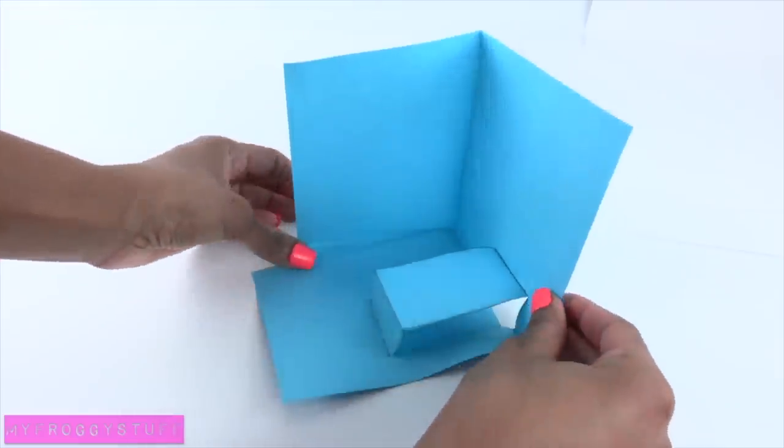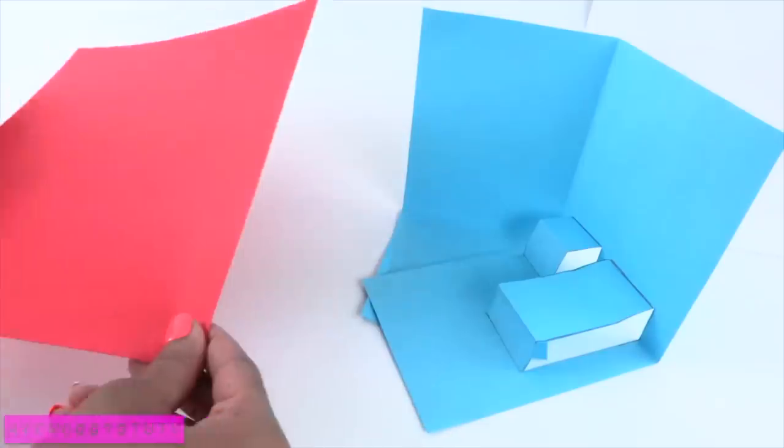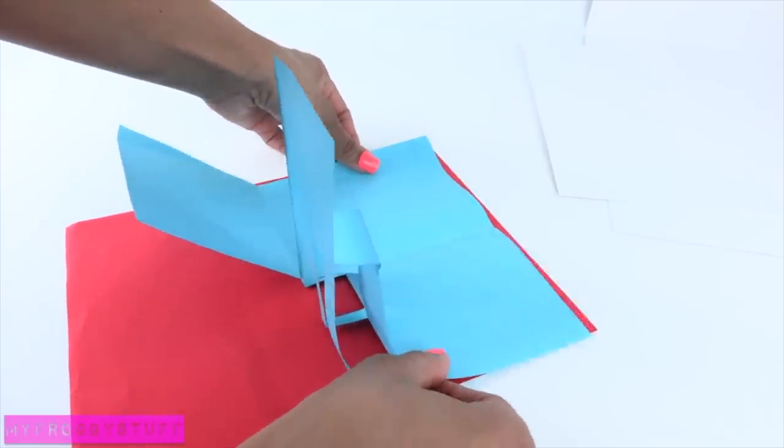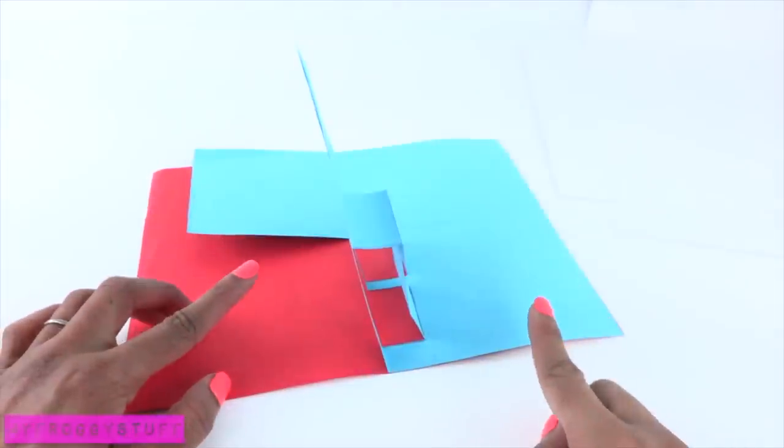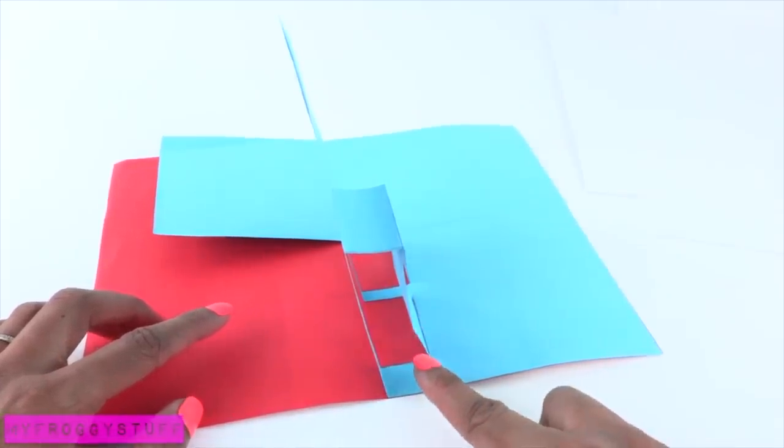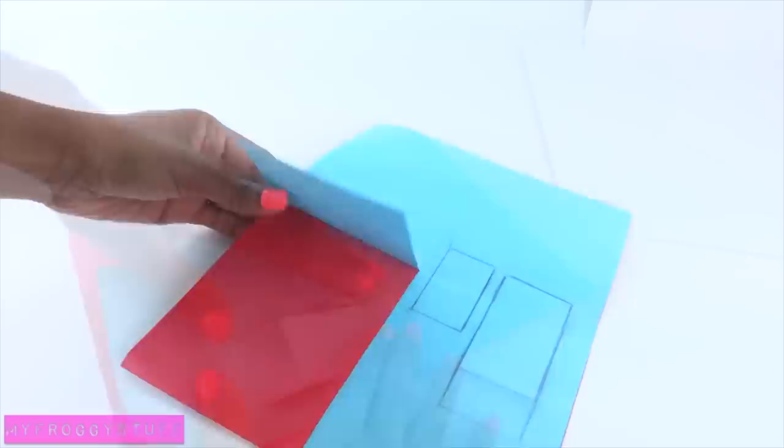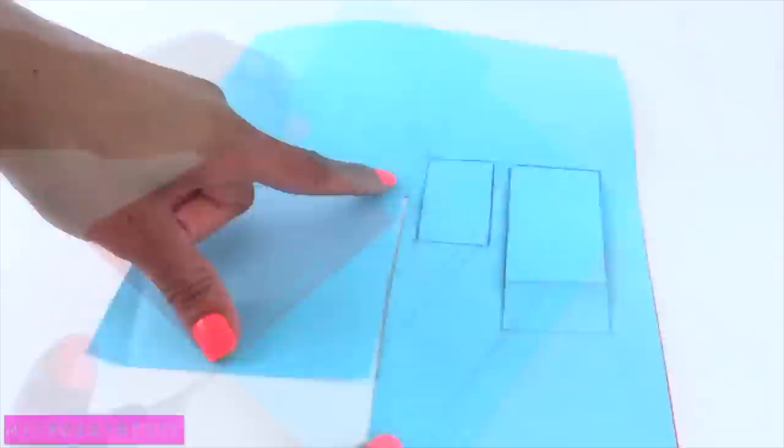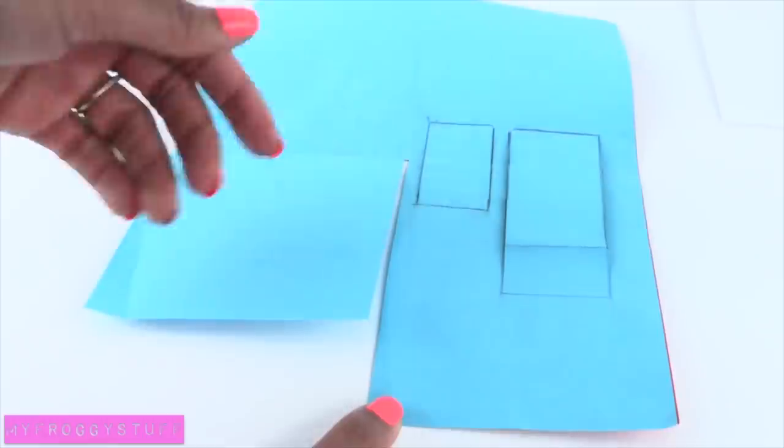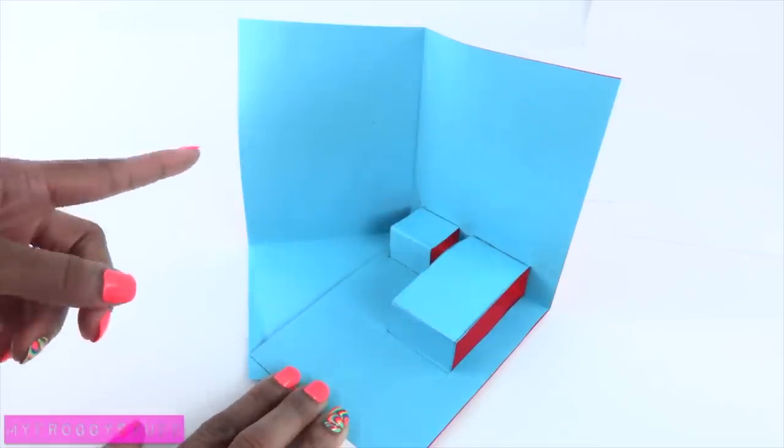Repeat to make a smaller one for a side table or nightstand. Take a second poster board or a piece of paper, line up the edges and glue it to the back wall. Allow the glue to dry completely before continuing so you don't accidentally glue down the pop-up bed. Trim off the excess.